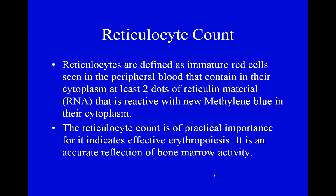Reticulocytes are immature red blood cells. We do a reticulocyte count after giving erythropoietin to confirm the bone marrow is responding. If a patient has anemia, a reticulocyte count shows whether the bone marrow is working and whether the body is trying to fix the problem itself.